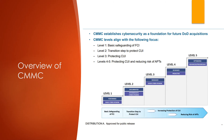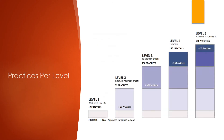Each maturity level within the model has a specific focus. Level one is meant to safeguard federal contract information. Level two serves as a transition step in the cybersecurity maturity progression to protect CUI. Level three is meant to protect CUI anywhere it resides on the organization's information systems. Levels four and five are established to protect CUI and reduce the risk of advanced persistent threats. Looking at the model, we can see all the practices required at each maturity level: there are 17 practices that need to be implemented at level one and 171 at level five. We will take a more in-depth look at what practices and processes make up each maturity level in later videos.